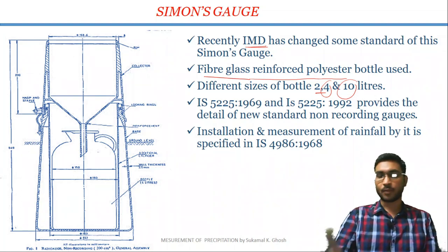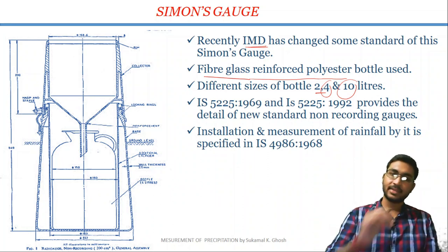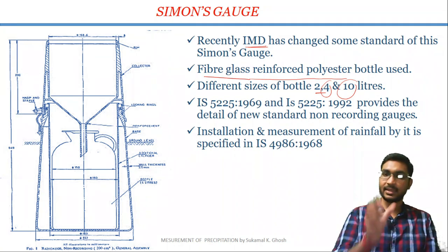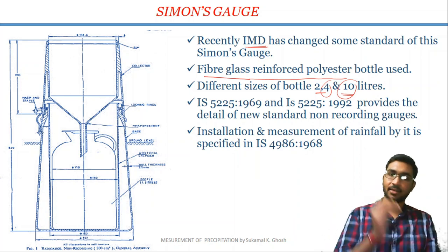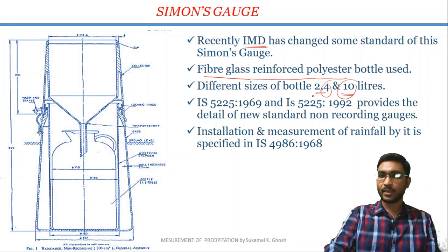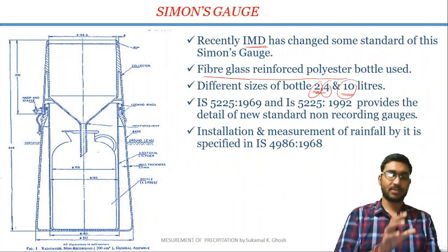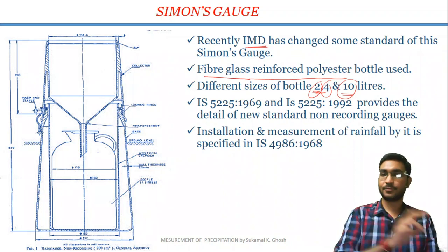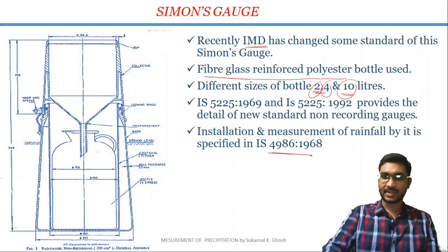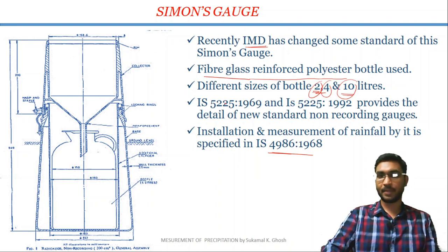Suppose in an area where you know from past precipitation data that the rainfall is higher, then in those areas you can use maybe a 10 litre bottle. And suppose in an area the rainfall from past data is very less, so you may use the 2 litre bottle. If you want to know the installation process and the process of measurement of rainfall from this modified Simon gauge, you have to refer to Indian Standard 4986-1968, where the installation and measurement procedures are written.